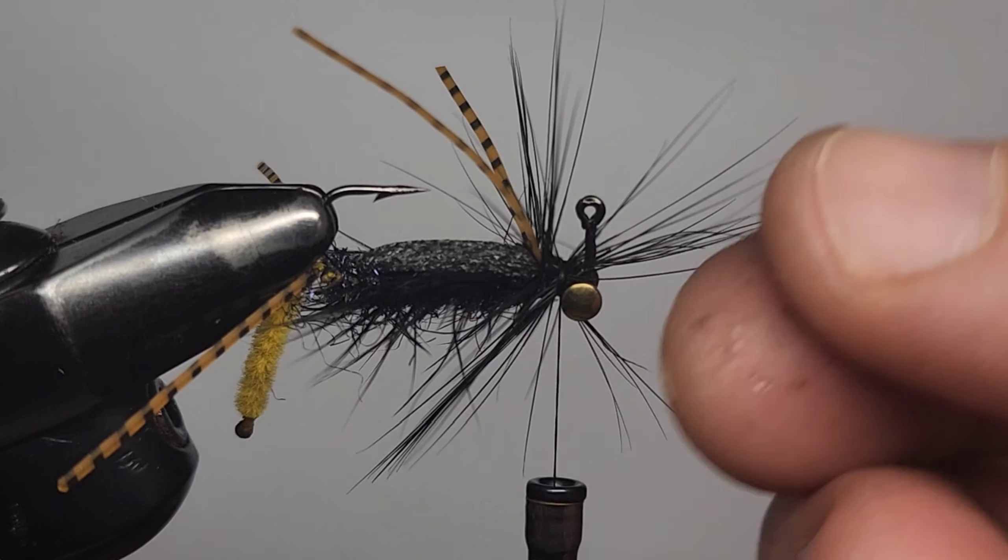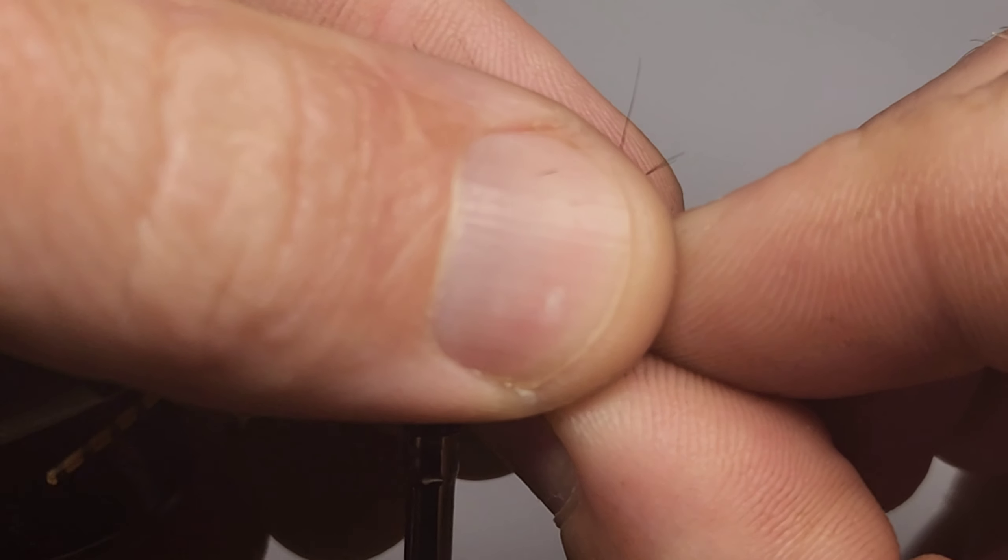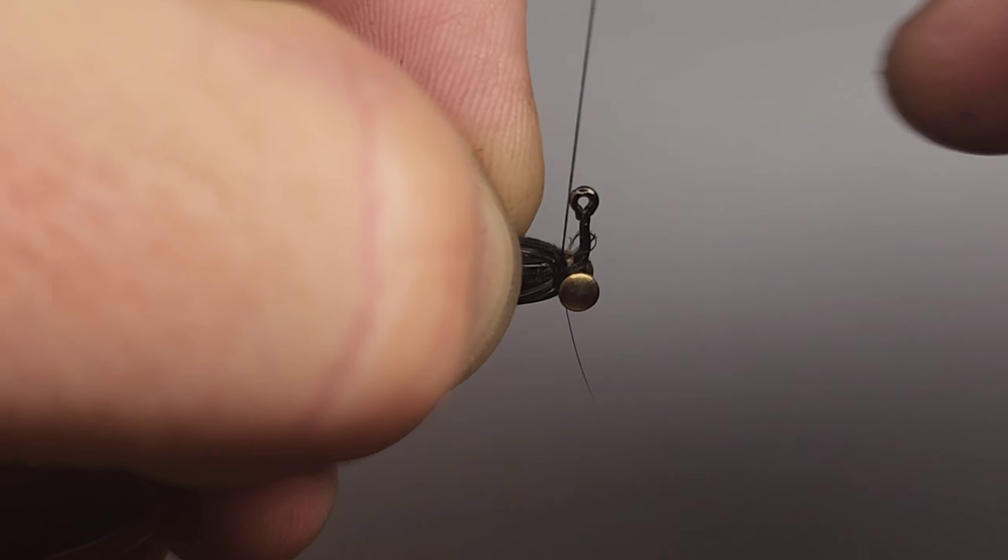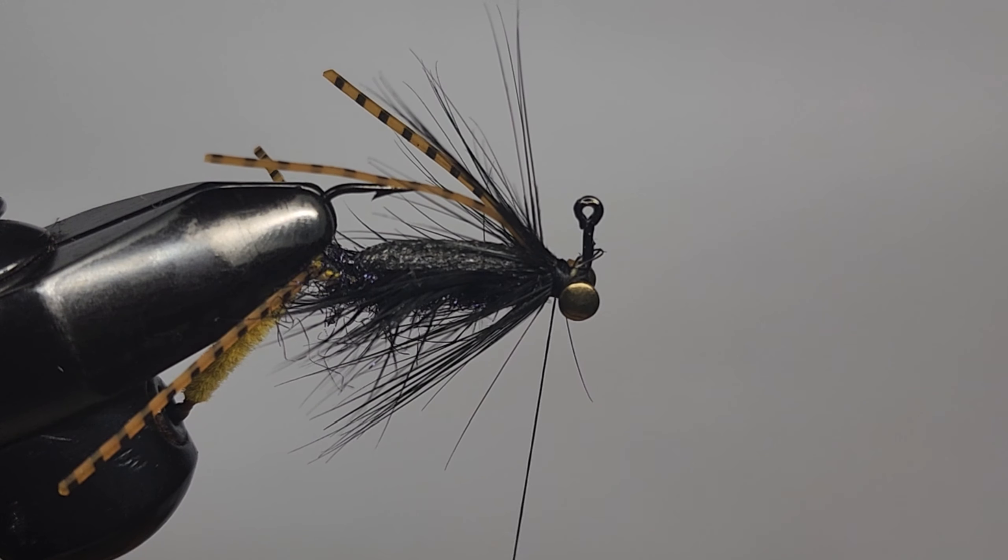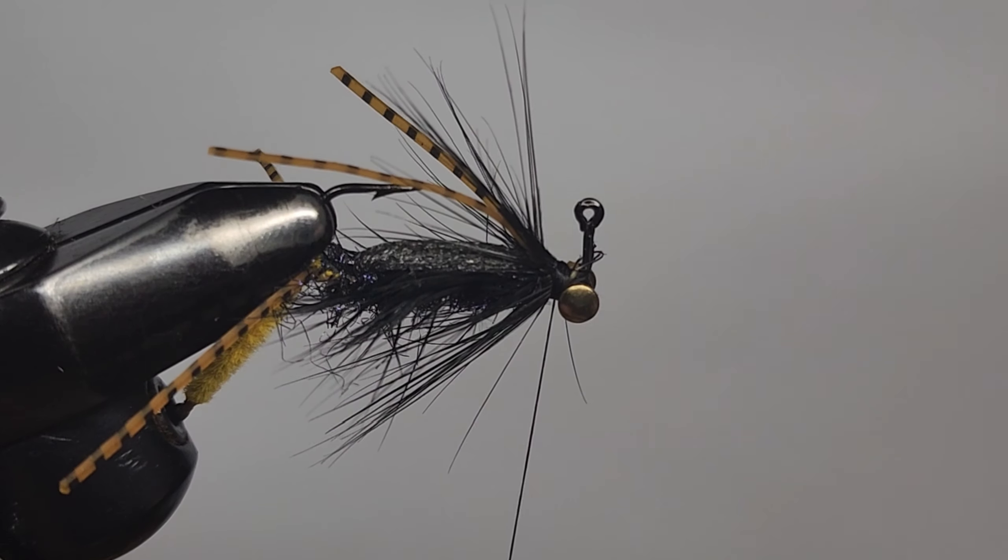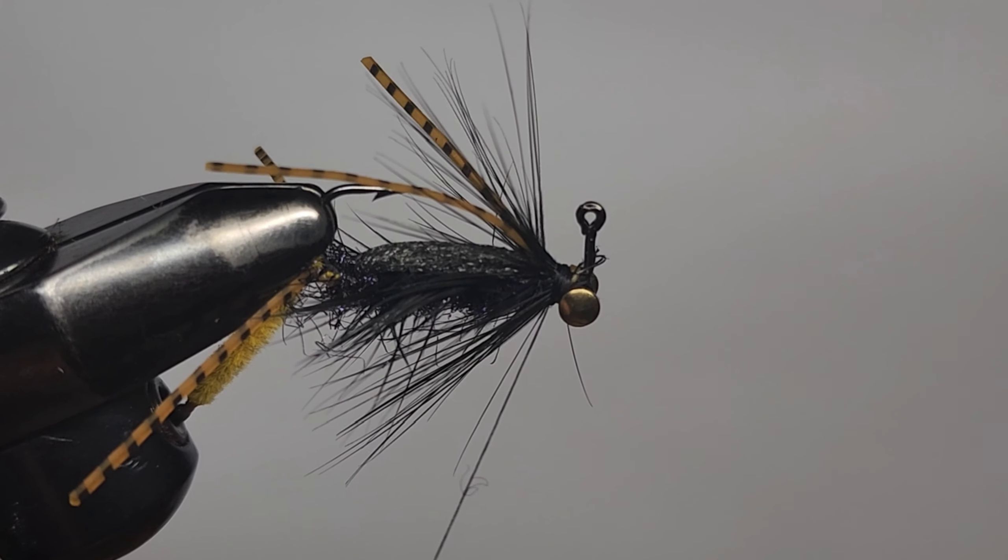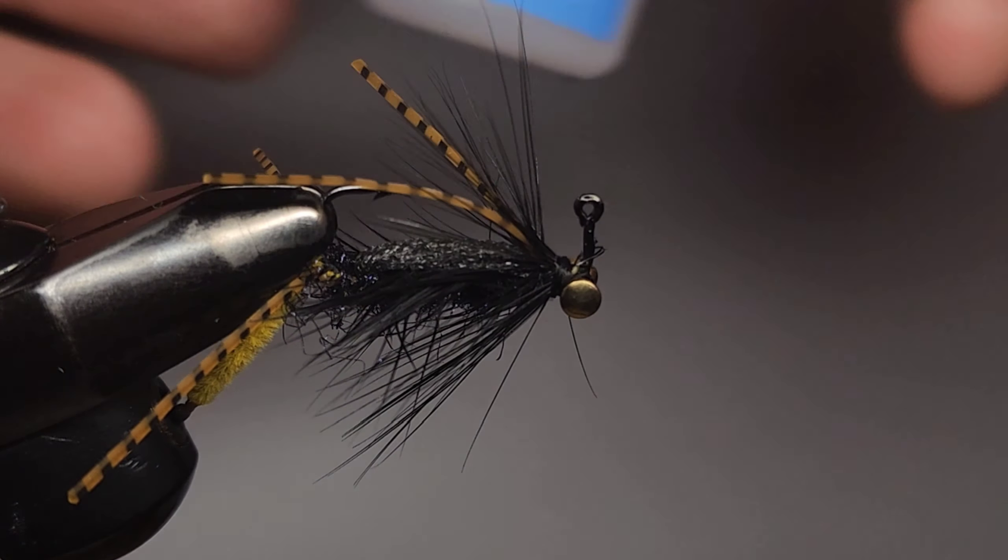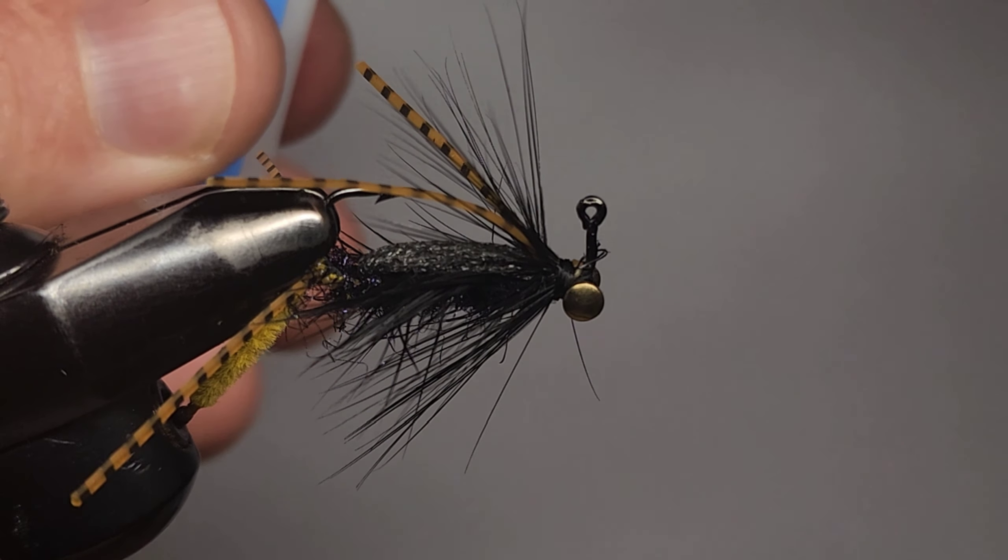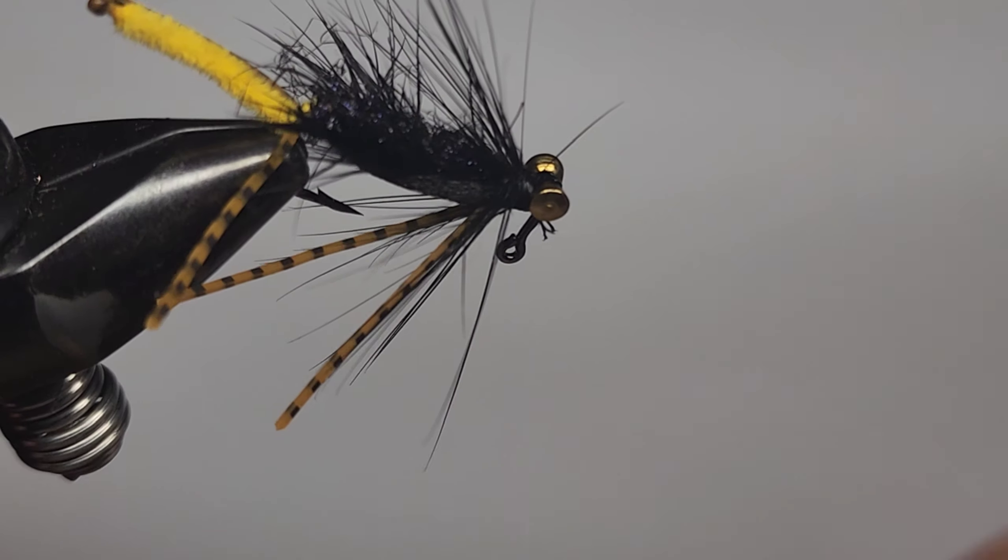Snip that off. Now let's just pull all those fibers back, best you can without hooking yourself, and give it a nice wrap around the head. Secure all that down. That's looking good to me. And give it a whip finish. Three to four turn whip finish. Snip away your thread. Now come in with your super glue. That'll be there. Come in with your super glue.